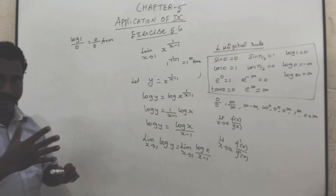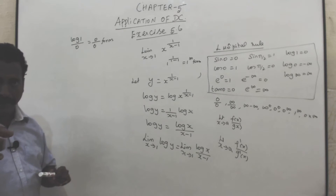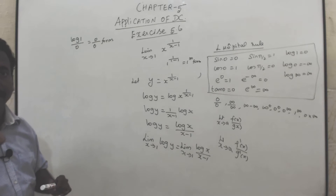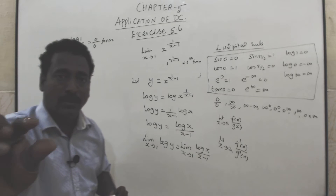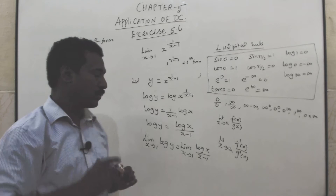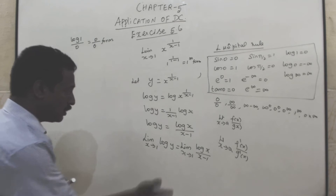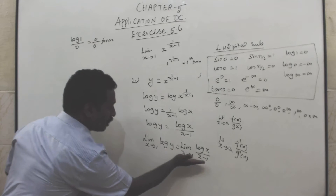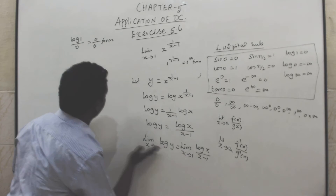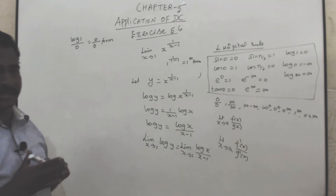Since we have the 0 by 0 form, we apply L'Hôpital's rule. Once we apply L'Hôpital's rule, we just concentrate on the right hand side and forget about the left hand side.